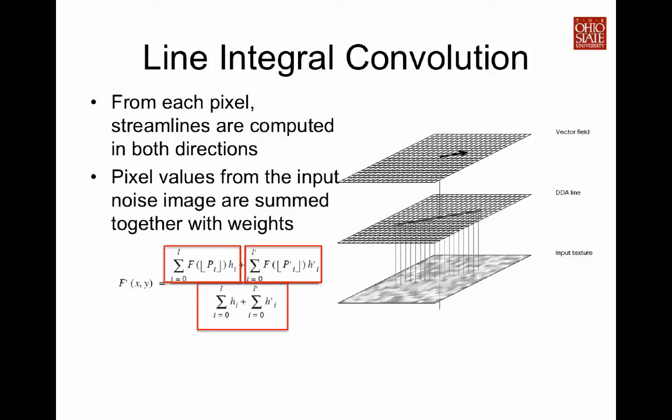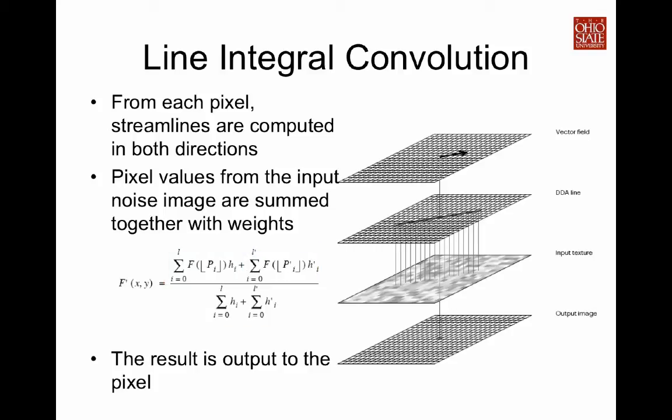So why does this work? This is because if you repeat this process at every pixel, because their values are computed from a similar set of input noise pixels, pixel values along the streamline will be highly correlated, but the pixel values between adjacent streamlines are randomized.